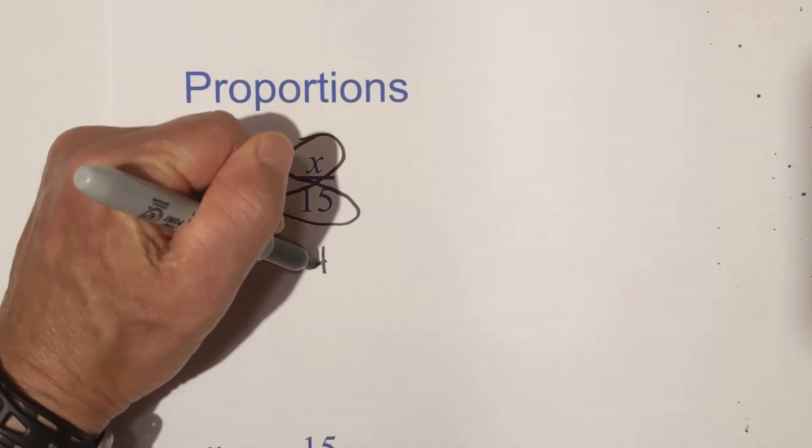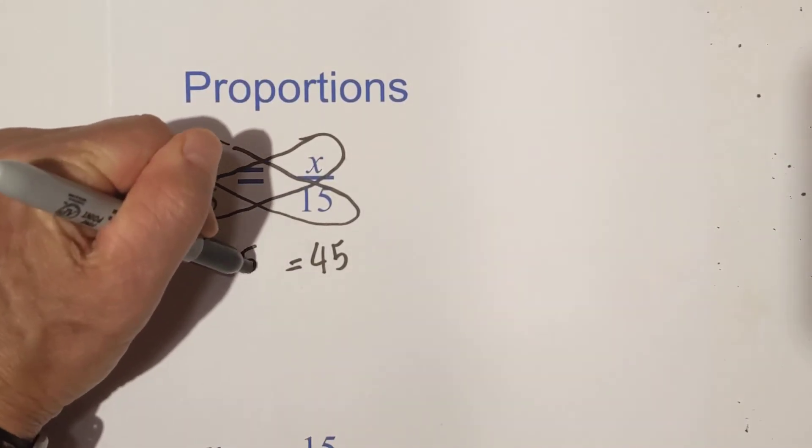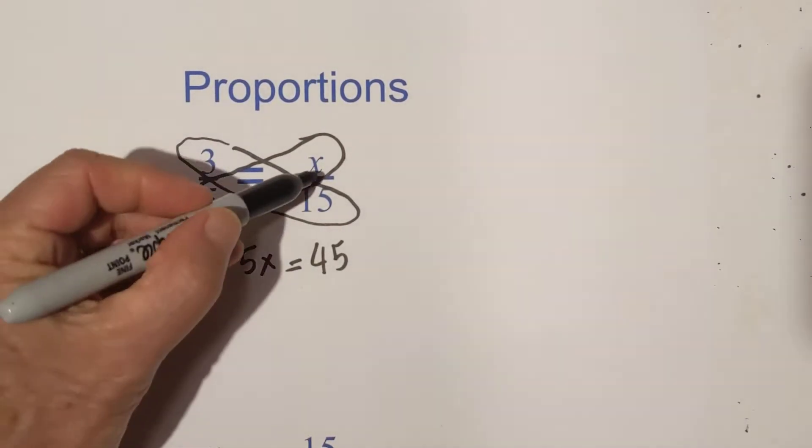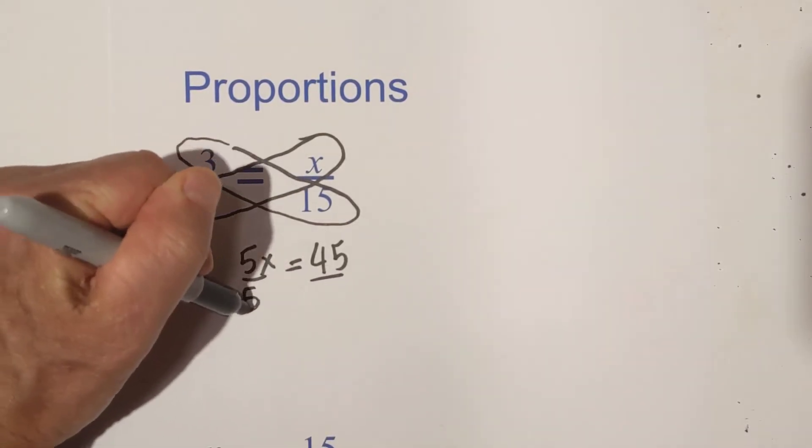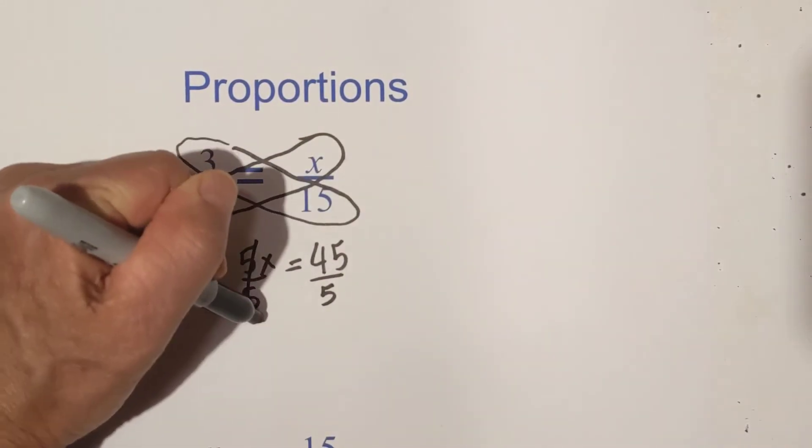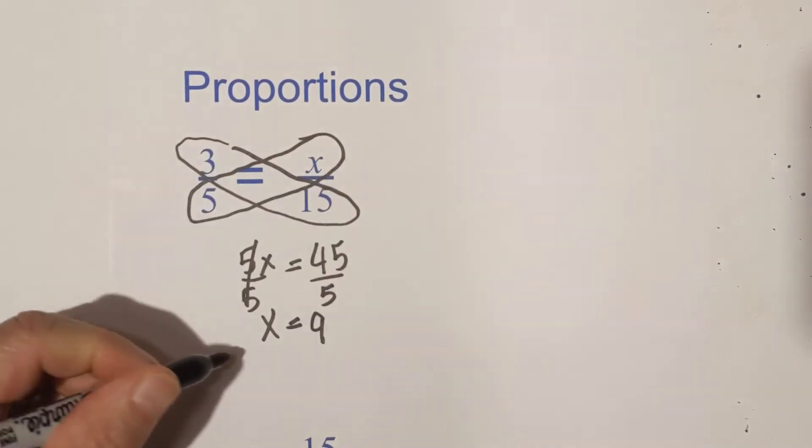So you go 3 times 15, which is 45, equals 5 times x, which is 5x. Then all you do to solve for x is just divide both sides by 5. And these cancel, and 45 divided by 5 is 9. So x is 9.